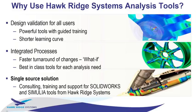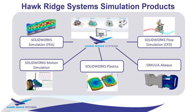When we talk about analysis products, we generally have four major ones — technically five. For today's topic of linear static structural analysis, there are two main tools we'll contrast: SOLIDWORKS Simulation, available as Standard, Professional, and Premium, and Simulia Abaqus, which is a high-level, very powerful analysis tool that can handle some really complex problems and situations.